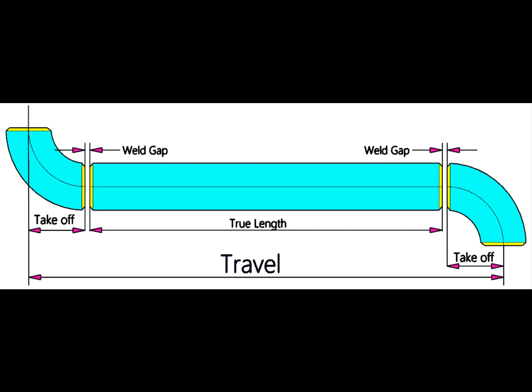So how we will calculate the true length of the spool? The true length or cut length is: add 2 welding gaps and 2 take offs, then minus this sum from the travel.